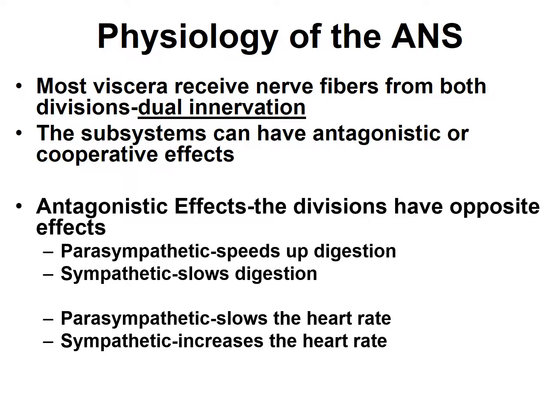If they have antagonistic effects, that means they have opposite effects. For example, with respect to the digestive system, the parasympathetic nervous system speeds up digestion while the sympathetic slows it down. With respect to the heart, the parasympathetic slows heart rate, while the sympathetic increases heart rate and also causes the heart to beat more vigorously — with more force.